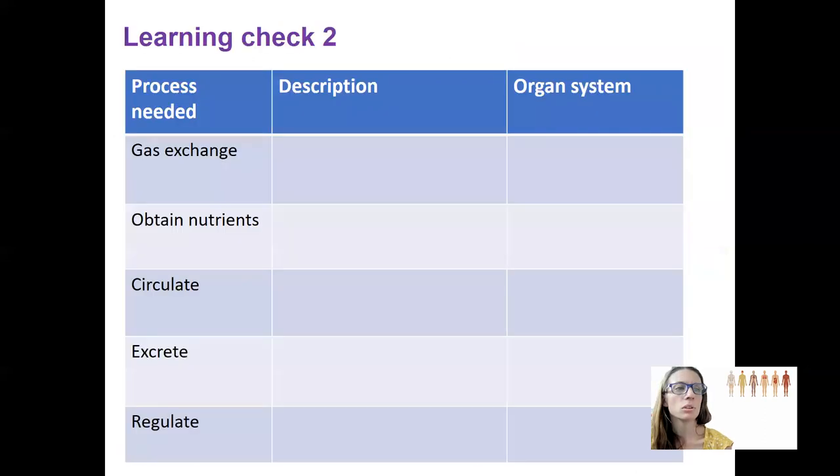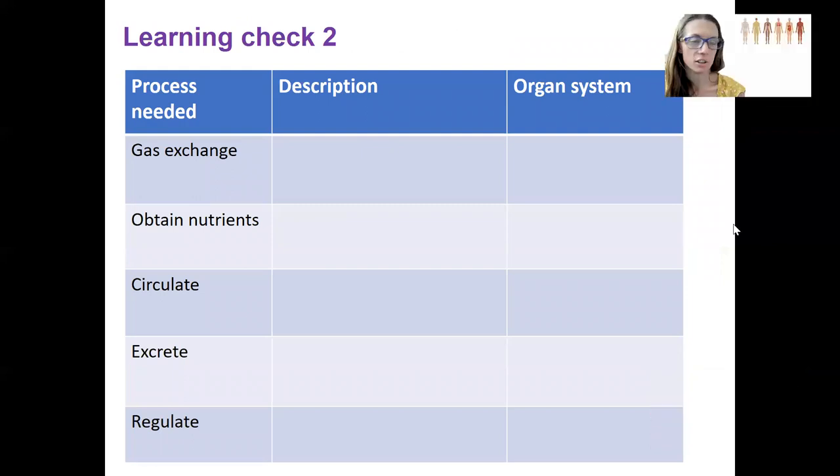Okay. Learning check number two. I've got some processes that are needed here in your body. I'd like you to write a description of what each of these is. So a little bit more than what I have here. And then what organ system or organ systems, which I should have there, are responsible, is or are responsible for these processes.